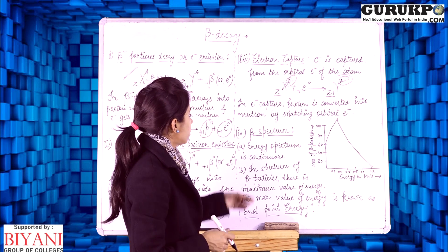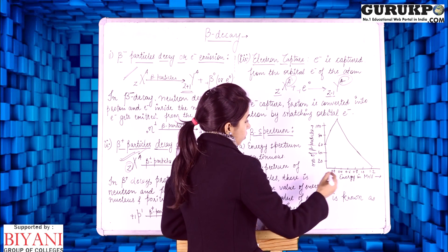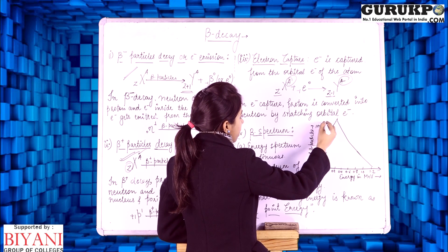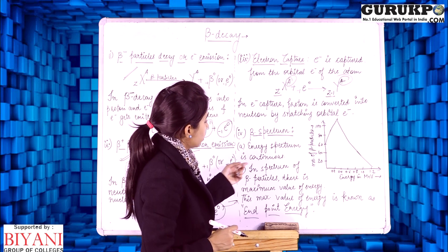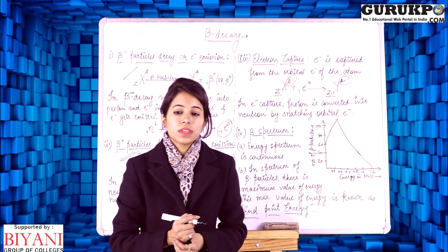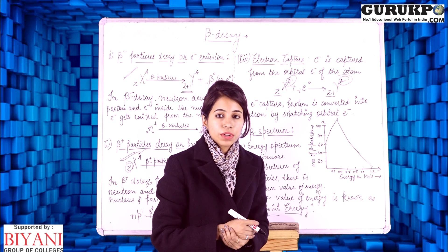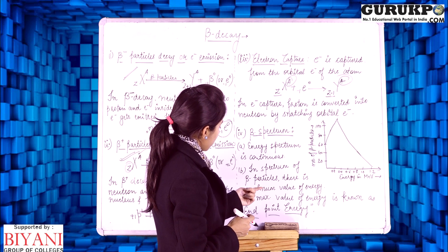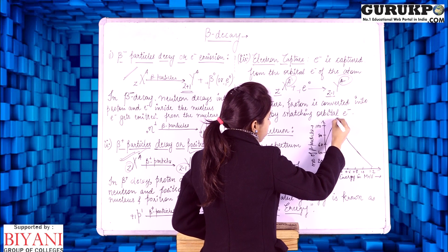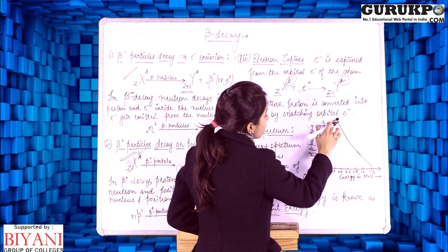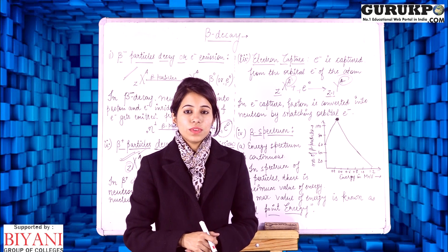The fourth topic is the beta energy spectrum. In the beta energy spectrum, a graph is plotted with the energy of the beta particles along the x-axis and the number of beta particles along the y-axis. As we can see from the graph, the energy spectrum is continuous, meaning beta particles of all energies can be emitted from the nucleus. There is also a maximum value of energy in the spectrum, represented by a specific point on the graph, which is known as the end point energy.